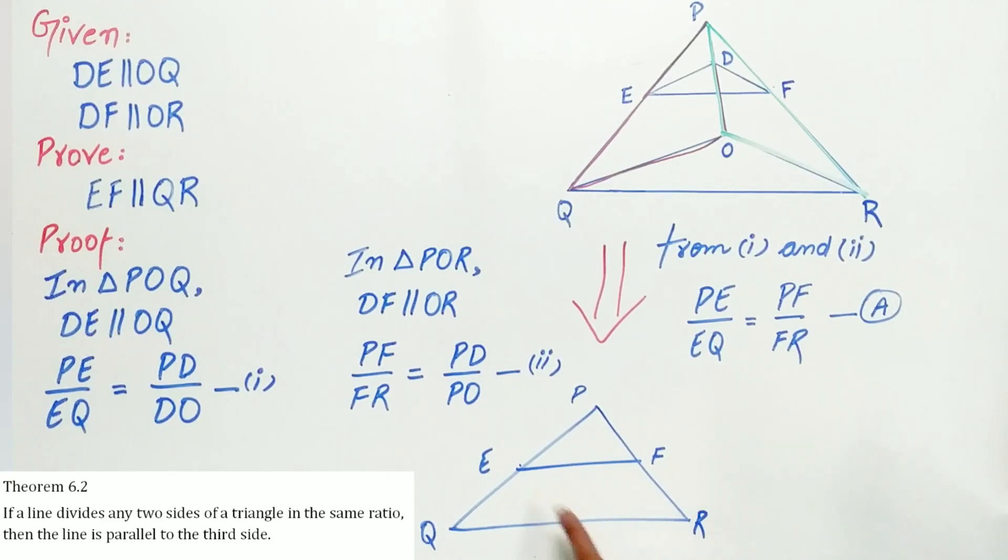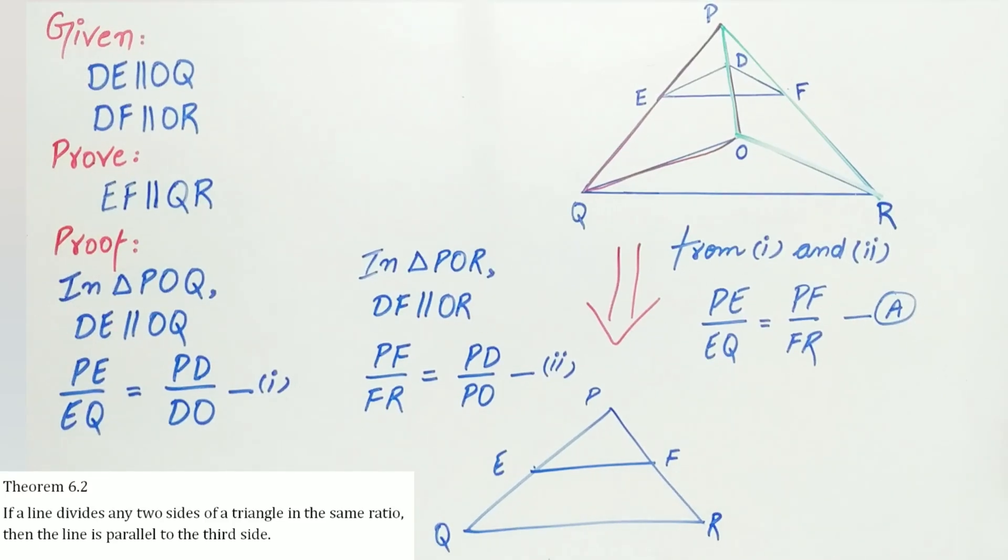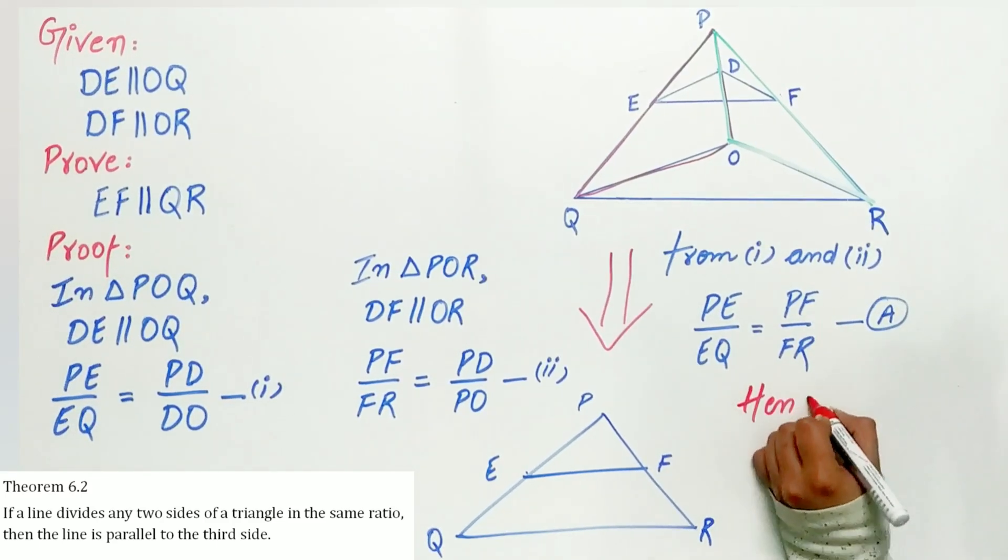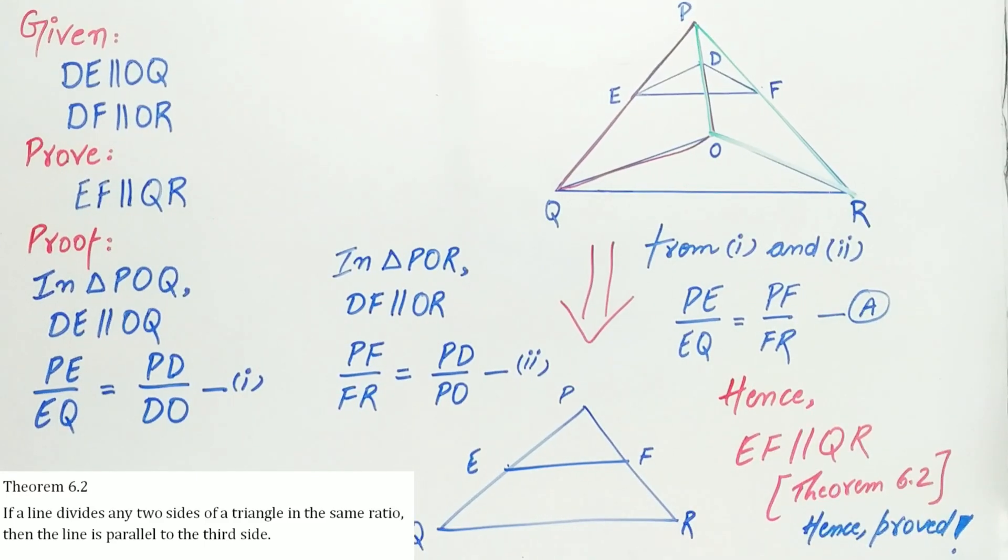Now, EF definitely divides the two sides of the triangle in the same ratio. Hence, it is parallel to the third side, that is QR. Hence, EF is parallel to QR. Hence, proved.